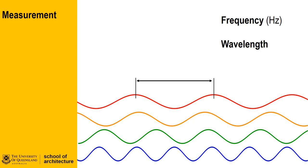The speed or repetition of sound waves over time is known as frequency, measured in hertz. It is the measure of the number of cycles over a second. Human auditory sensitivity can detect sounds from between 20 hertz to 20 kilohertz, or 20,000 cycles per second. The inverse of frequency is wavelength, which is the measure of the wave cycle from one peak to the next. The measure of sound is therefore a combination of the frequency and the strength of the sound.